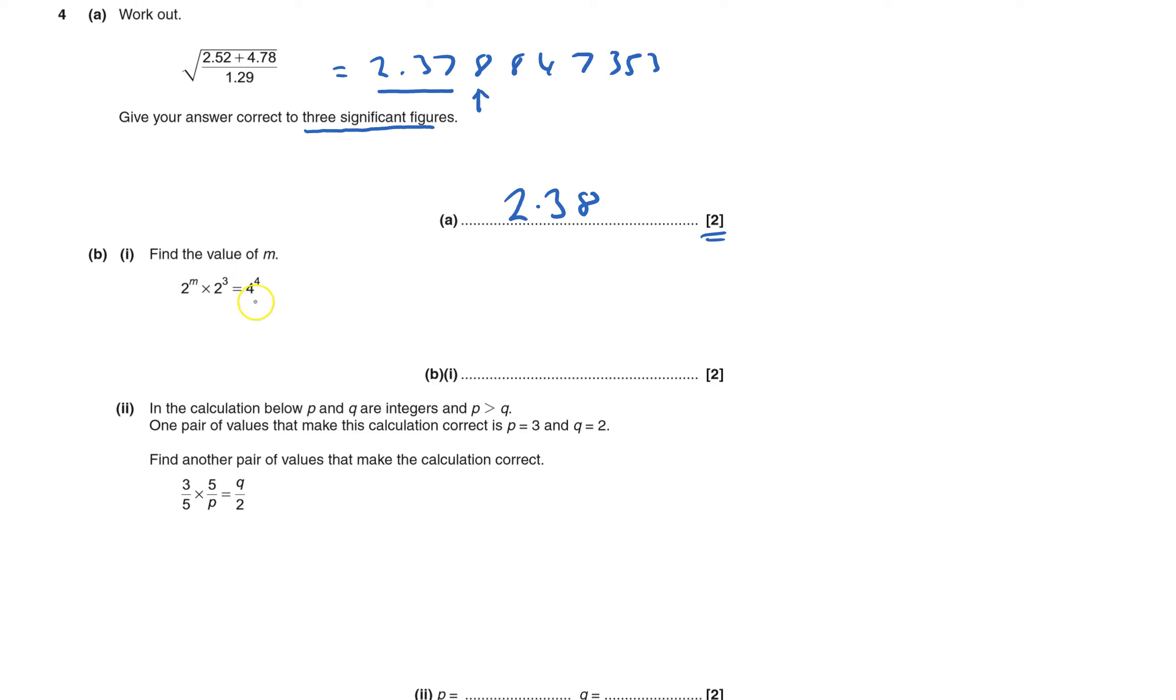Find the value of m, and this looks as though it could be a sort of law of indices thing and just combining things, but it's probably easier just to put some numbers in. So it says that 2 to the power of m times 2 cubed is 8 equals 4 to the power of 4 is 256.